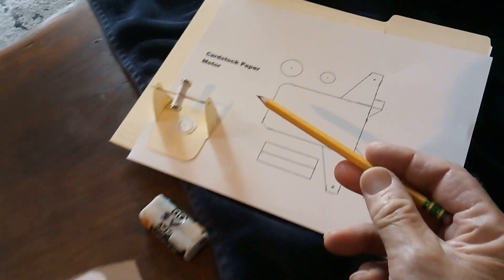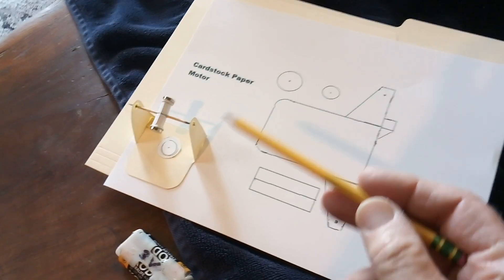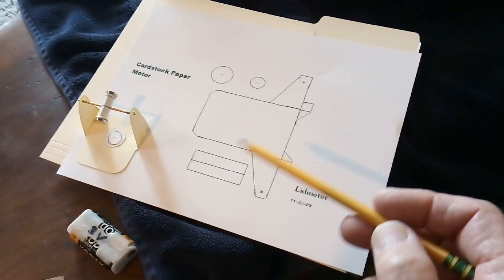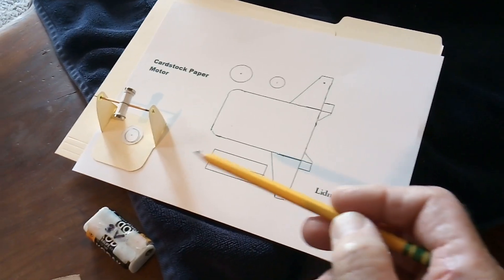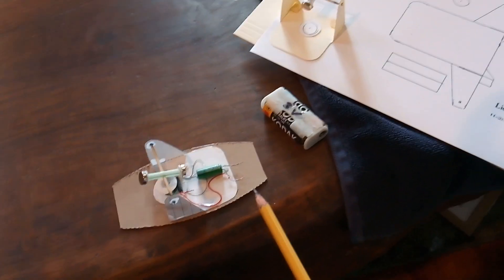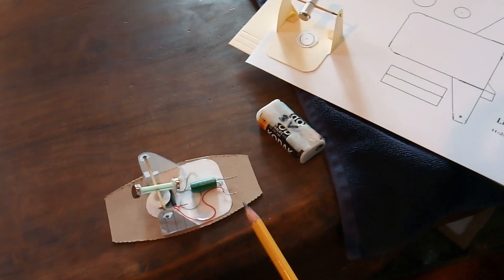Okay, I'm still working with this cardstock paper motor that you could print out from a JPEG file and then fold it up and glue it together and make a little pulse motor. I mounted this on a piece of cardboard so I was going to walk around the room and show that it wasn't being blown by air.